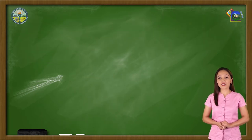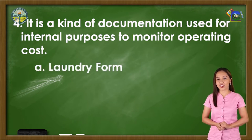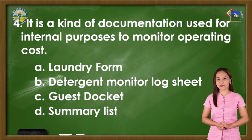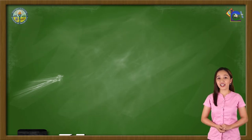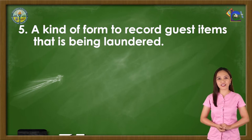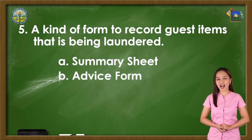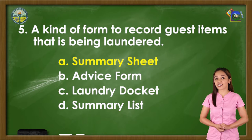Number 4: It is a kind of documentation used for internal purposes. Number 5: It is a kind of form to record guests on the list. A. Laundry form, B. Detergent monitor log sheet, C. Guest docket, or D. Summary list. The correct answer is letter C, Guest docket. Number 5: It is a kind of form to record guest items that are being laundered. A. Summary sheet, B. Advice form, C. Laundry docket, or D. Summary list. The correct answer is letter A, Summary sheet.